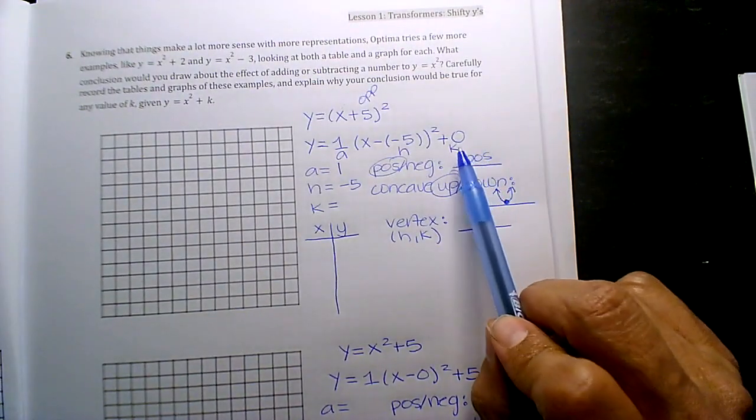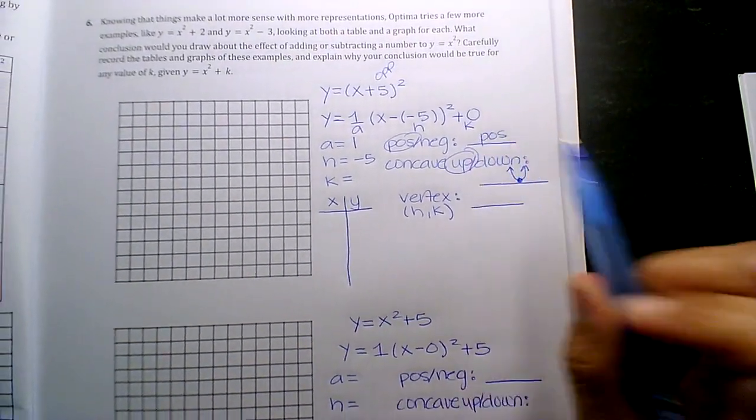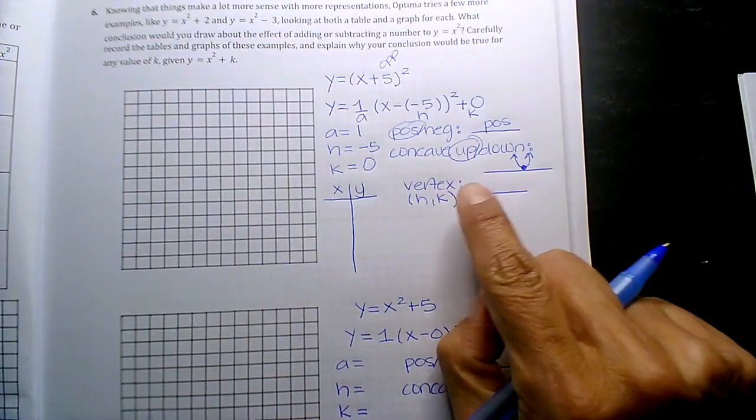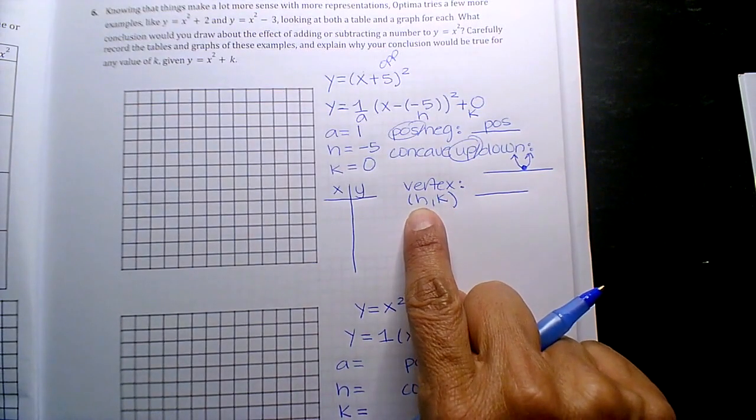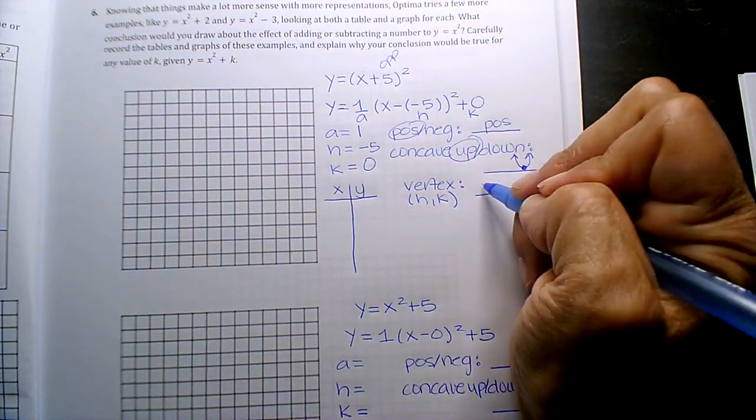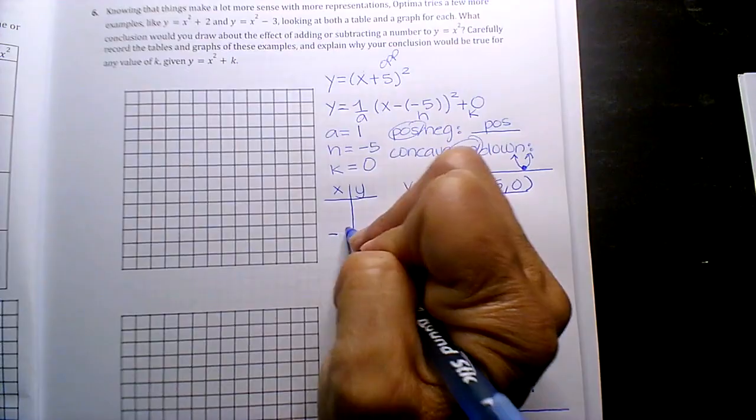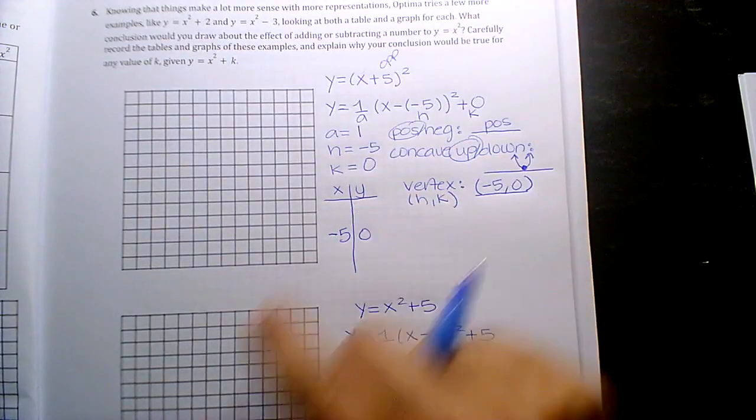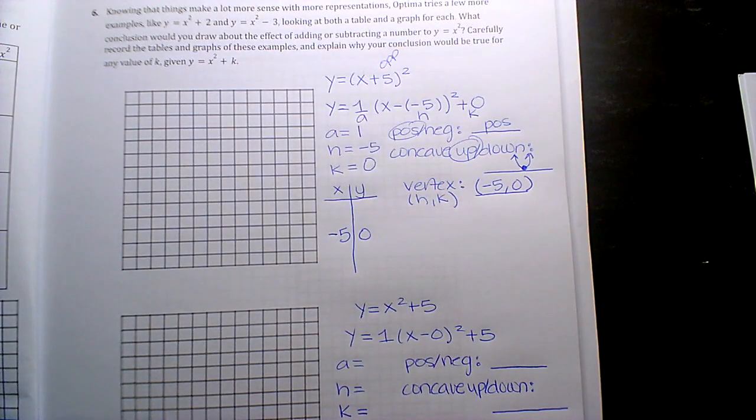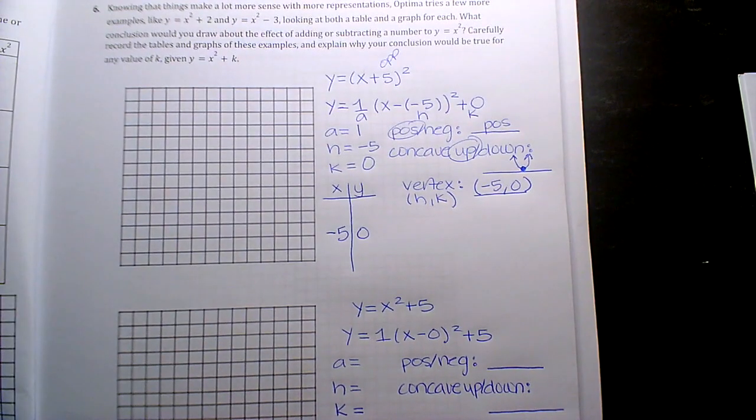Alright, and then what's my k value? Zero. Alright, so what is my vertex? Your vertex is a point h, k, so my vertex is what? Negative five, zero. And it goes in the third slot, and just make space so you can go up, up, down, down.